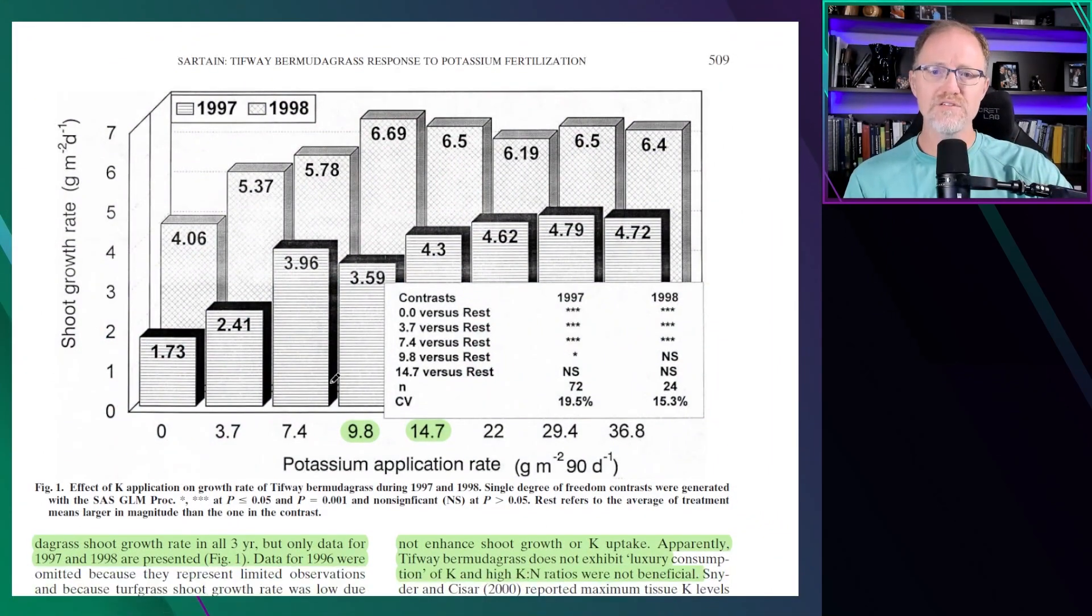Shoot growth rate: you'll notice that in 1997, the shoot growth rate continued to increase until about the three pound of potassium mark, or about a two to one N:K. And in 1998, it leveled off at a little bit less than that, two to one N:K. Or two pounds of potassium per year in 1998 was where it maxed out. And about three pounds of potassium per year in 1997 is where the growth rate maxed out.